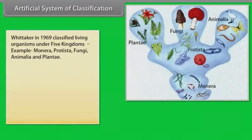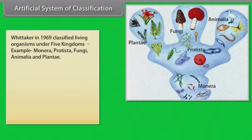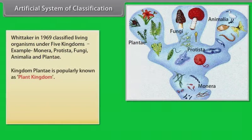Artificial system of classification. Wittaker in 1969 classified living organisms under five kingdoms. Example: Monera, Protista, Fungi, Animalia, and Plantae.